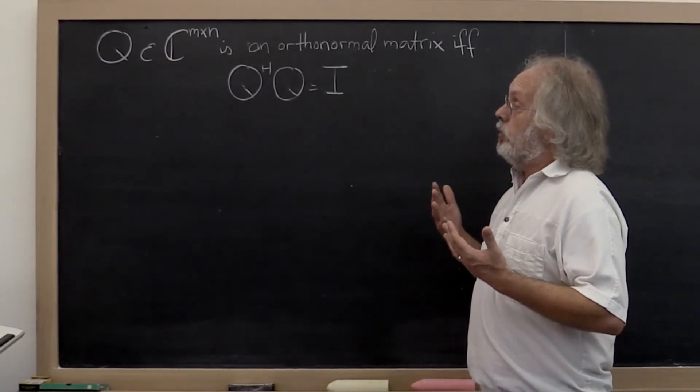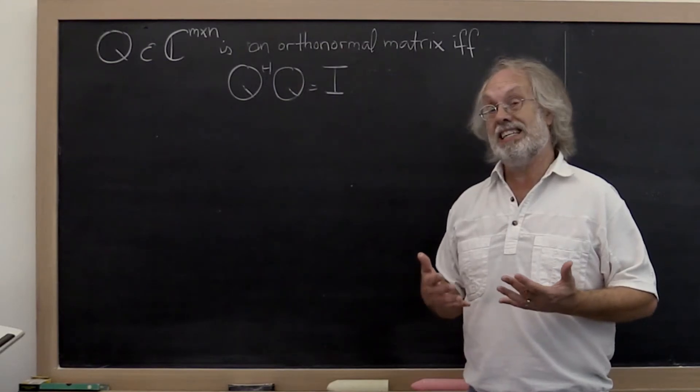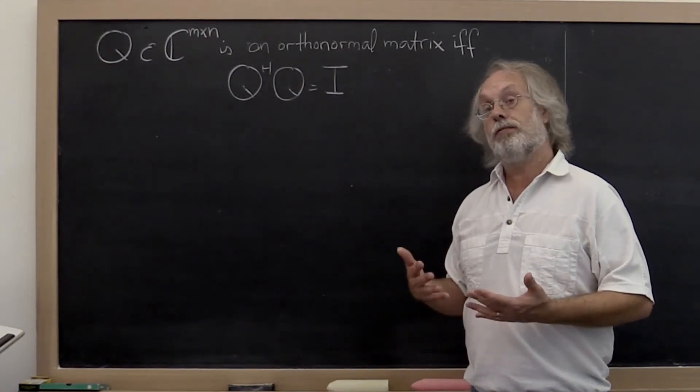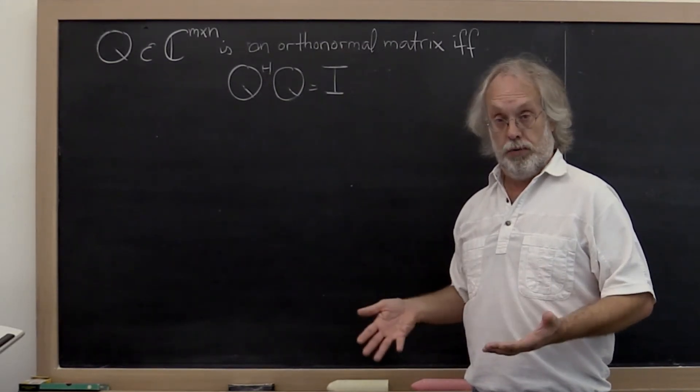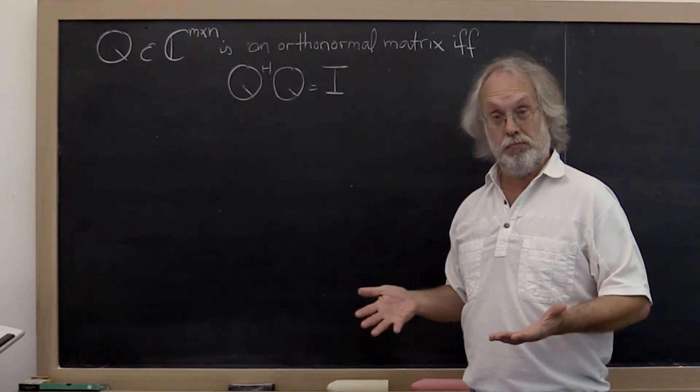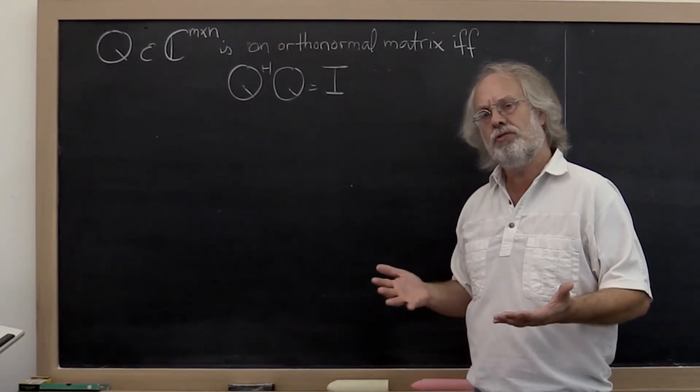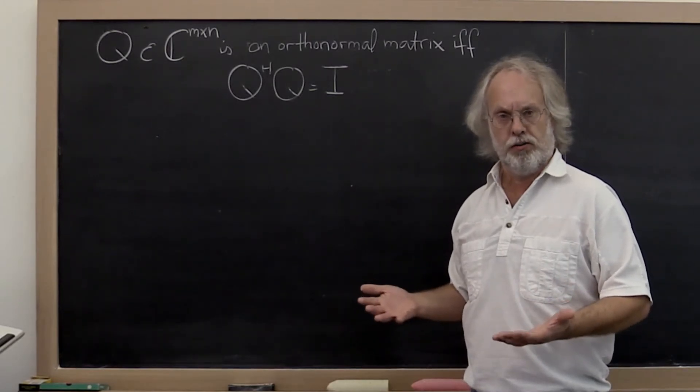And if a unitary matrix is real valued, then often the matrix is called an orthogonal matrix, which of course can lead to a lot of confusion. Because you would think an orthogonal matrix, that just means that its columns are orthogonal.